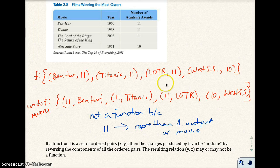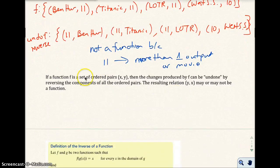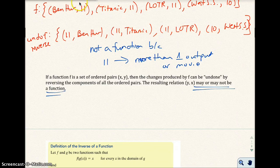So it's really important for you to understand when something's a function and when it's not. Up here this is a function, because if I type in Ben-Hur, the only thing that would pop out would be 11 Oscars. How many Oscars did Titanic win? Only 11. Lord of the Rings, 11, and so on. But if I reverse the ordered pairs and I type in 11, more than one movie won 11 Oscars — we have Ben-Hur, Titanic, and Lord of the Rings. A function F is a set of ordered pairs (X, Y). The changes produced by F can be undone by reversing the components of all the ordered pairs. The resulting relation (Y, X) may or may not be a function.